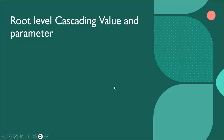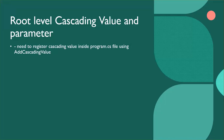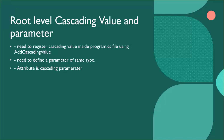Let's see how we can define root-level cascading values and parameters. To define root-level cascading values, you need to register the cascading value inside the program.cs file using the addCascadingValue extension method. Then you need to define a parameter of the same type inside the component where you want to consume it — it is important that the type of the cascading parameter is the same as the cascading value. The attribute will be CascadingParameter. Unlike component parameters, it does not require an attribute assignment for each descendant component where the data is consumed.